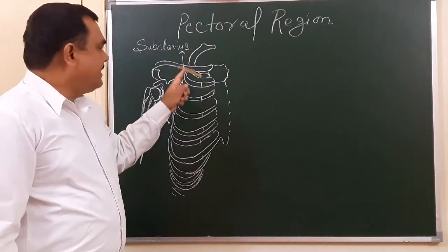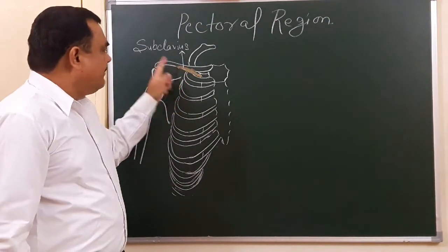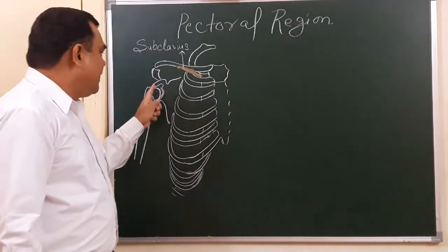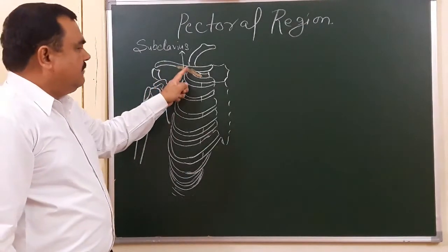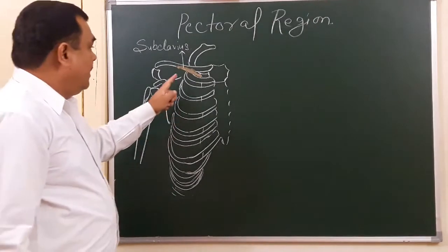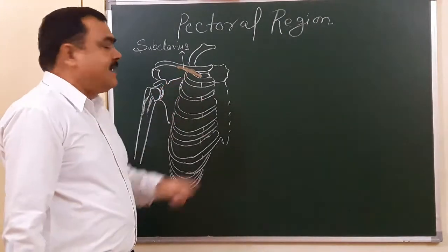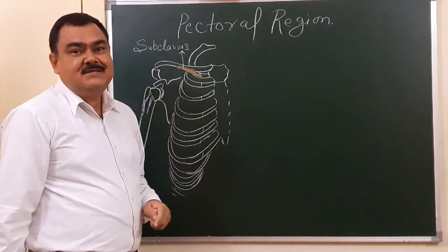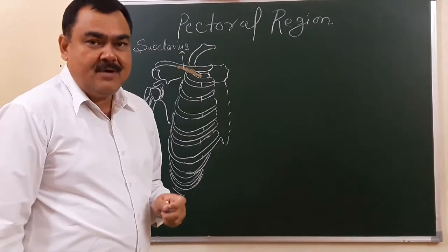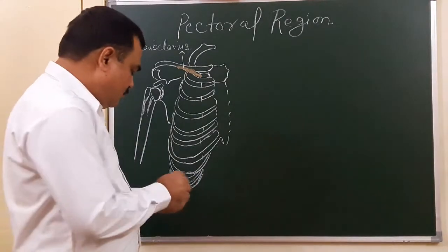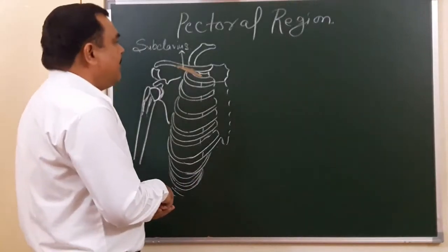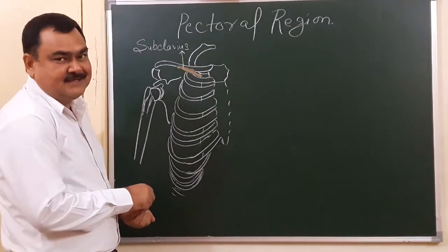The subclavius muscle stabilizes the clavicle during movement at the shoulder joint — it steadies the clavicle. The nerve supply of the subclavius arises from the upper trunk; the nerve to subclavius is a branch of the upper trunk of the brachial plexus.